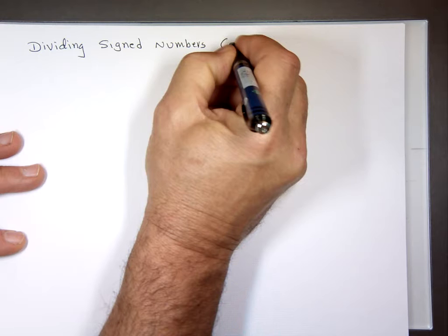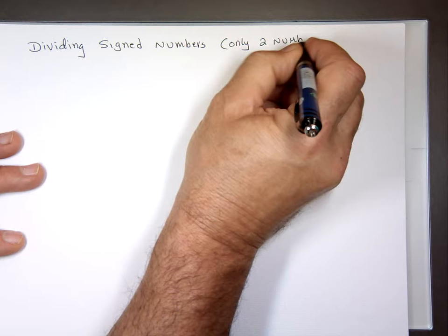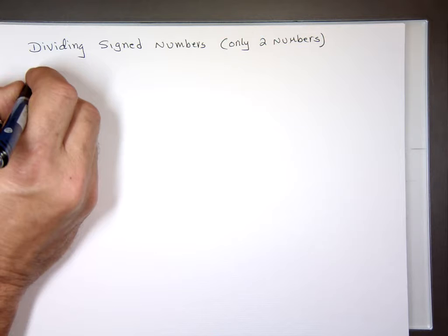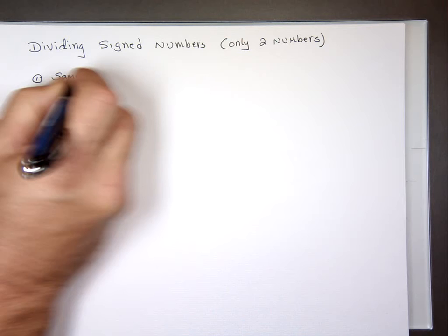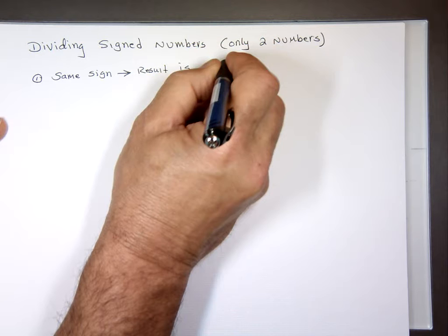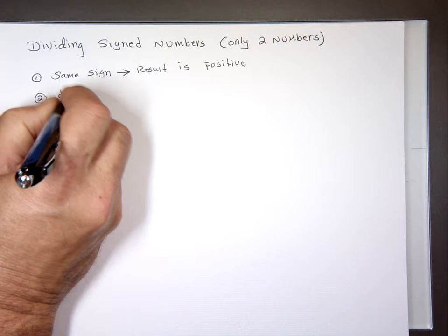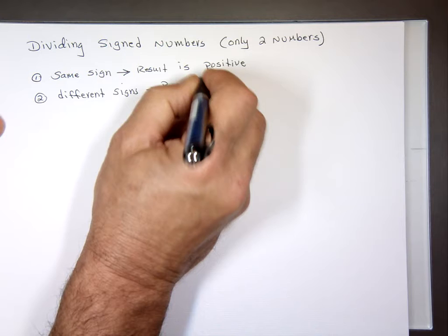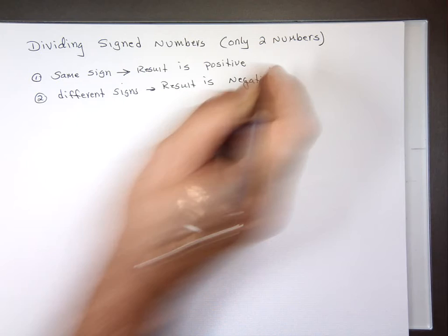We're still talking about only two numbers here, and we're going to use the same rule as multiplying. If you remember last class, we did multiplication, and the rule was: if the two numbers have the same sign, the result is positive. And if the two numbers have different signs, the result is negative.